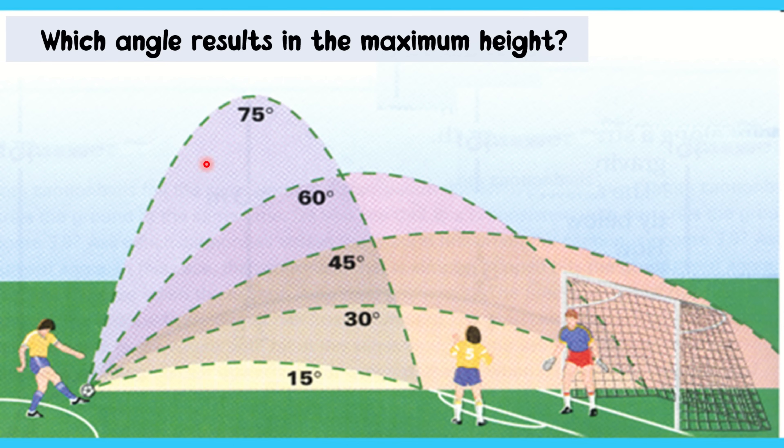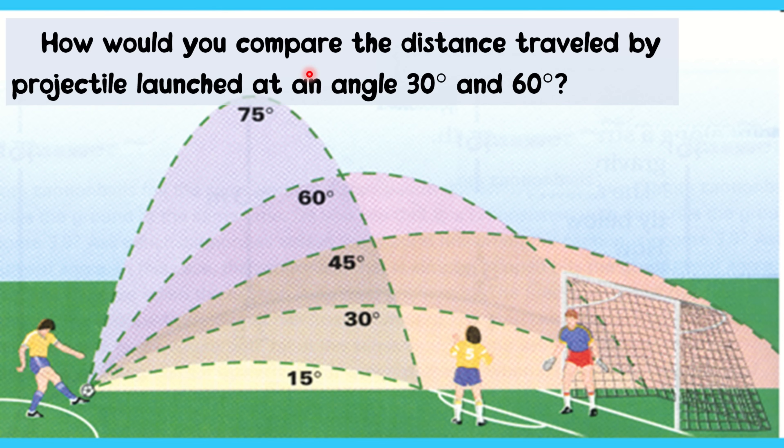Which angle results in the maximum height? As you can see, it is the 75 degrees angle. How would you compare the distance traveled by projectile launch at 30 and 60 degrees? As you can see, they have the same range. Same as 15 and 75. They have the same range.